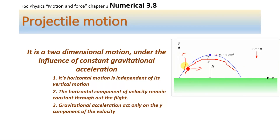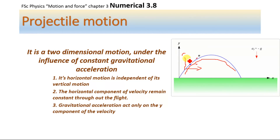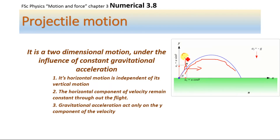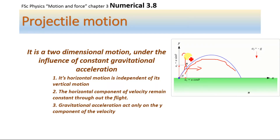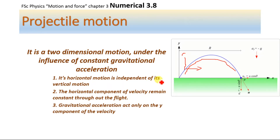The velocity of a projectile has two components: one is the x-component of the motion and the second is the y-component of the velocity. These two components — the x-component and the y-component — are independent from each other. So the horizontal motion of a projectile is independent of its vertical motion.